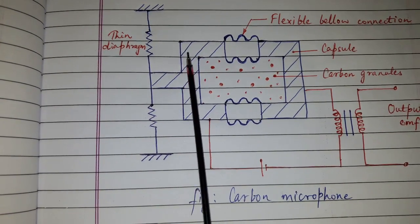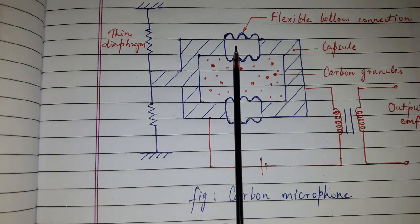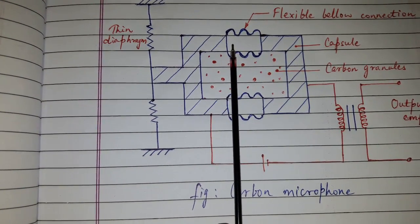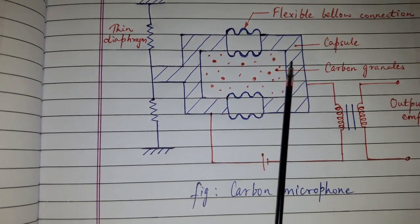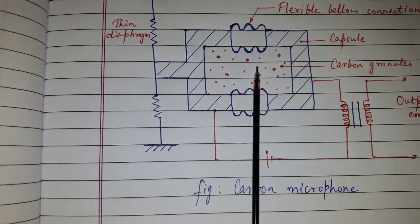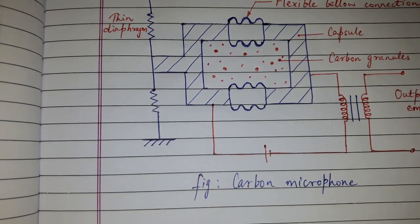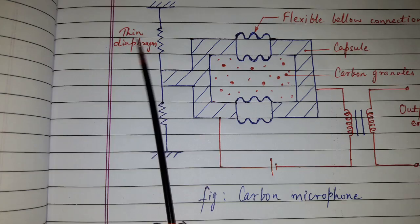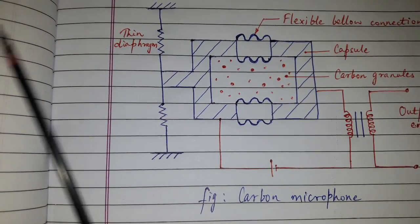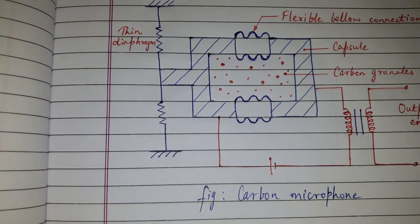The capsule contains carbon granules. The device is externally powered by constant voltage source. The sound wave vibrates the diaphragm and compresses the carbon capsule causing change in its resistance.